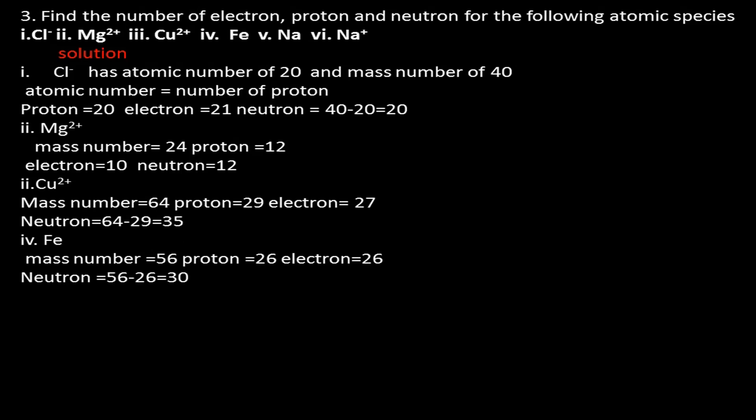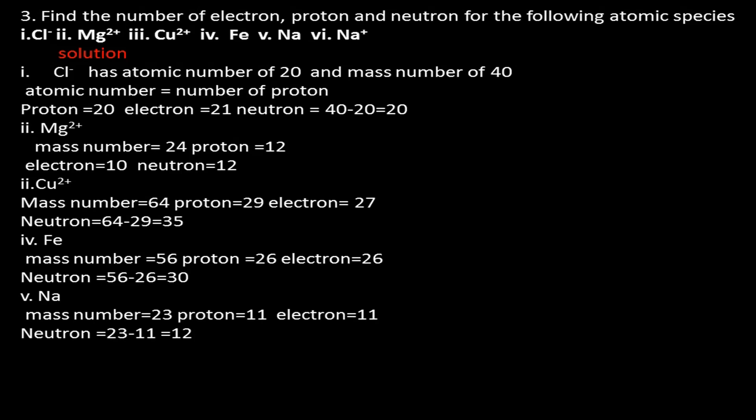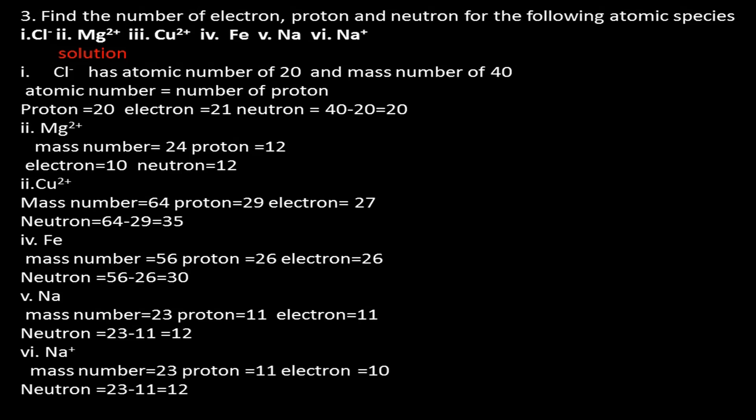For iron metal (Fe), mass number = 56 and atomic number = proton number = 26. Since iron metal has no charge, electron count = proton number = 26. Neutron number = 56 − 26 = 30. For sodium metal (Na), mass number = 23, proton number = 11, electron = 11, neutron = 23 − 11 = 12. For sodium ion (Na⁺), mass number = 23, proton number = 11, electron = 10 (lost one electron), neutron = 23 − 11 = 12.